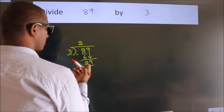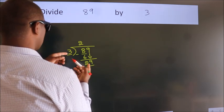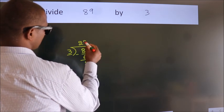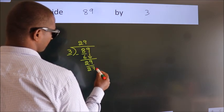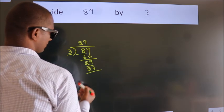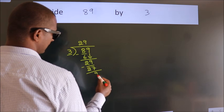A number close to 29 in the 3 table is 3 times 9, 27. Now, we subtract, we get 2.